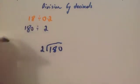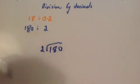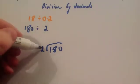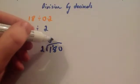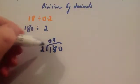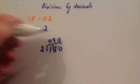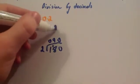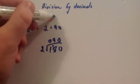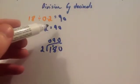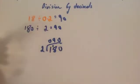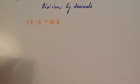Half of 180 is 90, but let's use the short division method. 2 into 1 doesn't go — remainder 1. 2 into 18 goes 9 times. 2 into 0 goes 0. The answer is 90. Therefore, 18 divided by 0.2 equals 90.